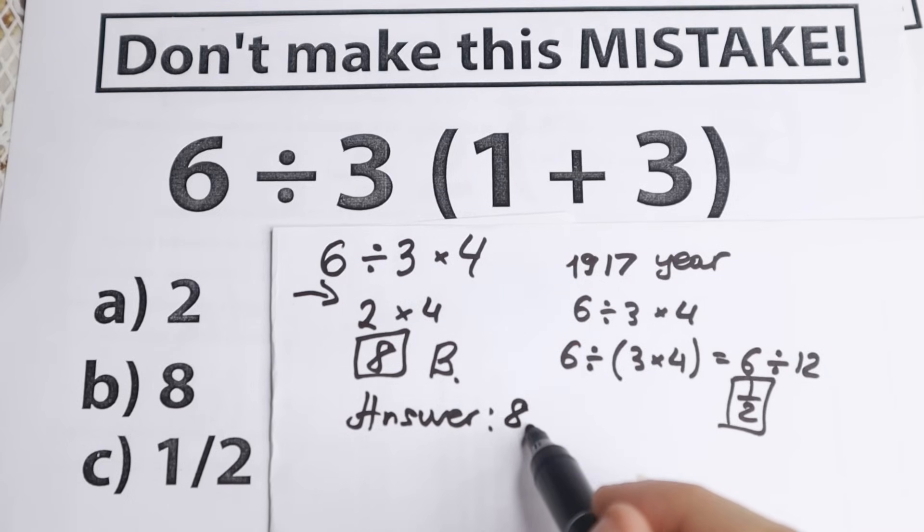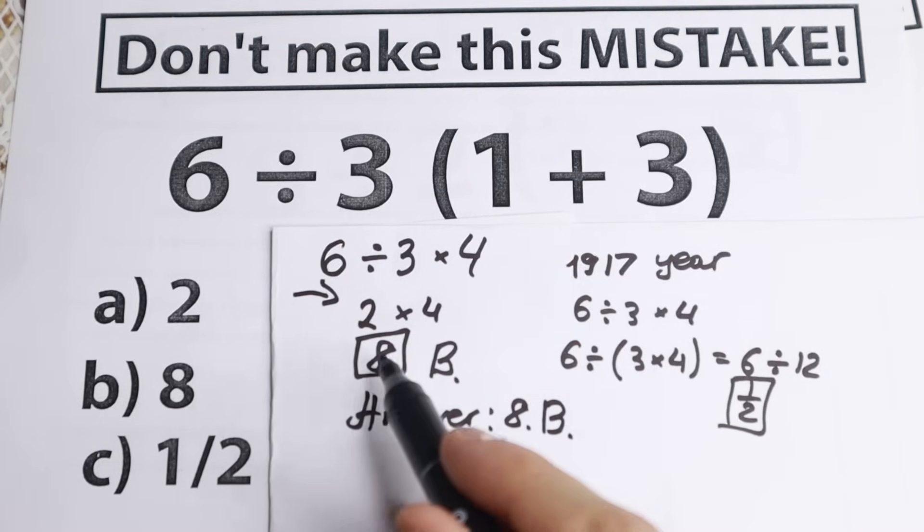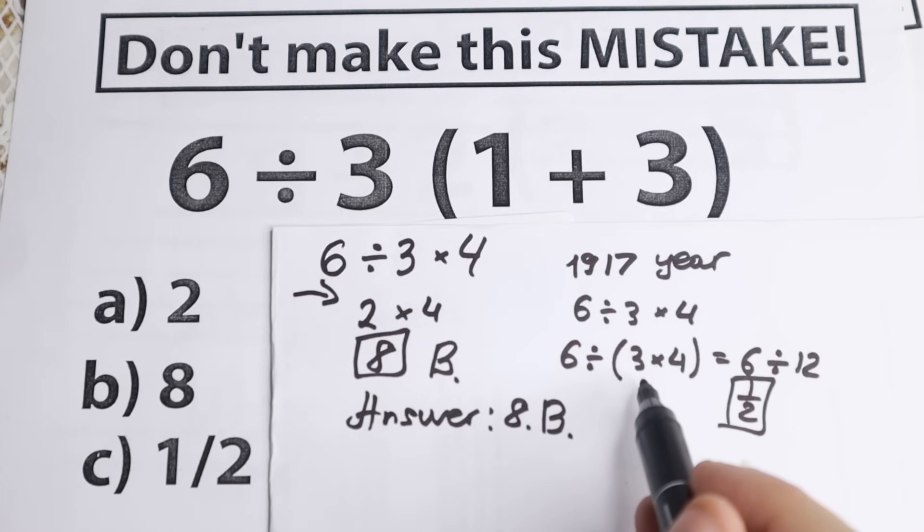So 8, option B. The historical order of operations is outdated because that was 100 years ago, and it is now considered incorrect.